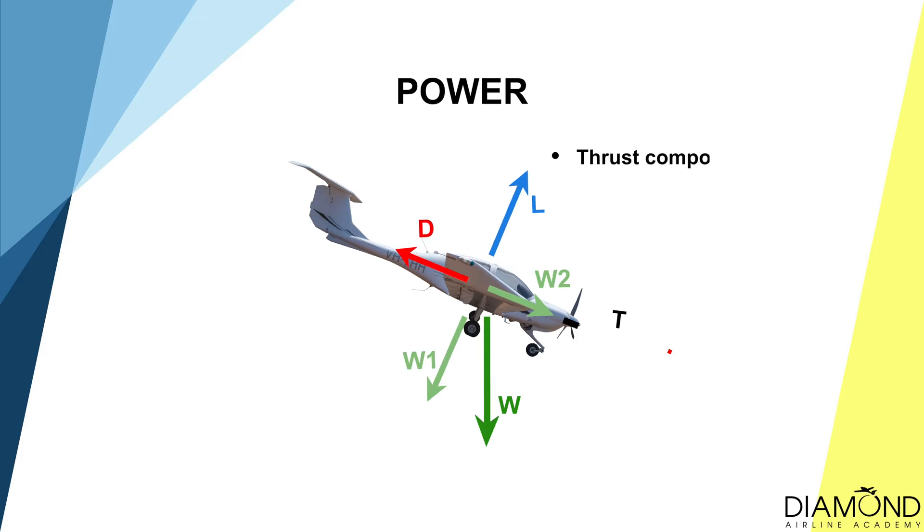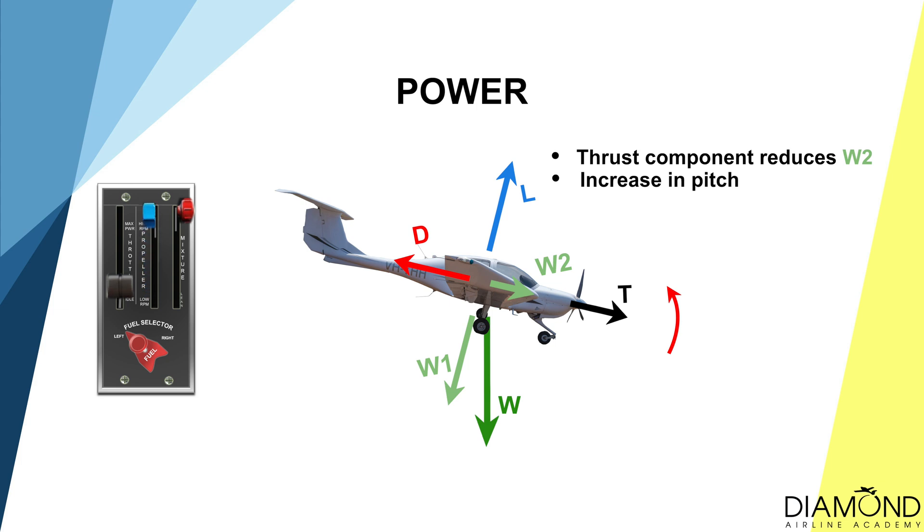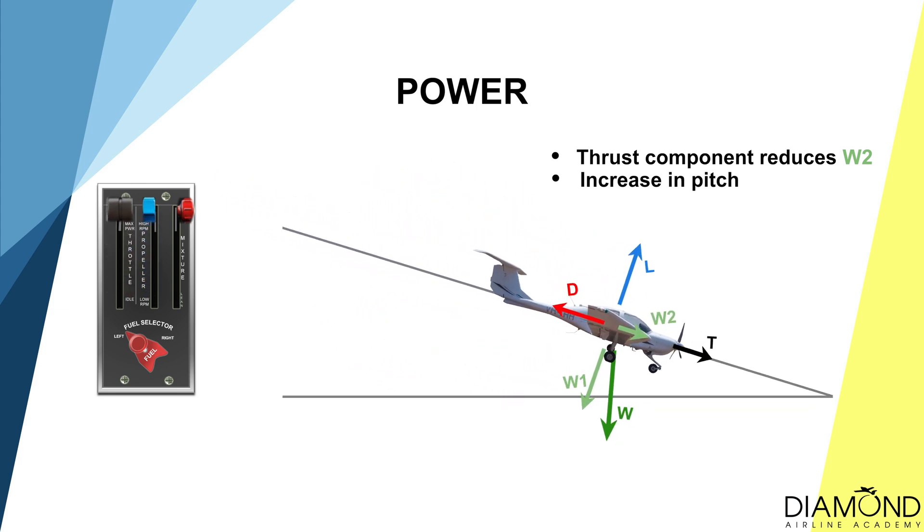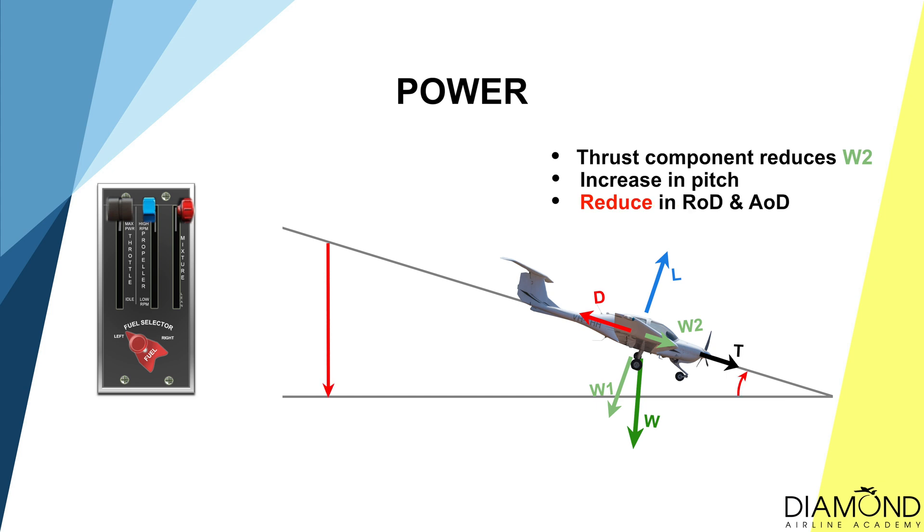The first factor is power from the engine. When conducting a glide descent, we bring the power all the way back to idle — essentially the engine is not producing any thrust, and that's how we do a glide descent. However, when doing a cruise descent, we reduce power but not all the way to idle, so there will be some thrust generated. Because of the extra thrust, weight 2 is no longer needed to balance the full amount of drag, and as a result we can descend at a reduced rate and reduced angle of descent.